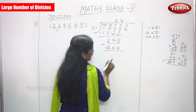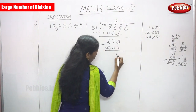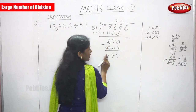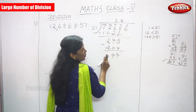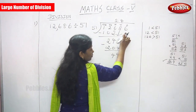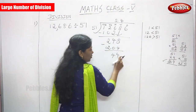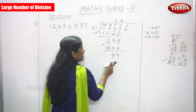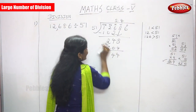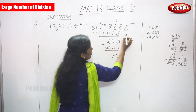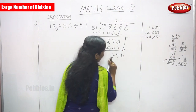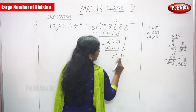Subtract: 8 minus 4 is 4, 4 minus 0 is 4, and 2 minus 2 is 0. So the remainder is 44. Before bringing down, compare: 44 is less than 51, so bring down the next digit from the ones place, giving 446.